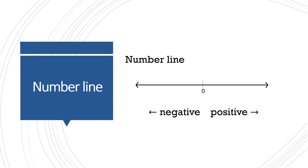A number line starts at zero. As I move to the right, I go to positive numbers; as I move to the left, I go into negative numbers. So if I wanted to display the number 3.14, I'd move to the right 3.14 units and draw a point or a mark on the number line to show where that numerical value is.